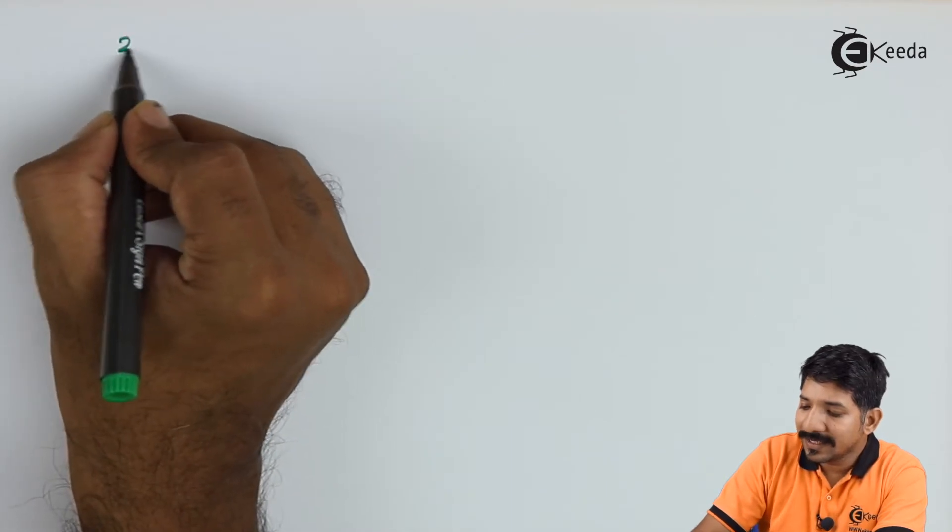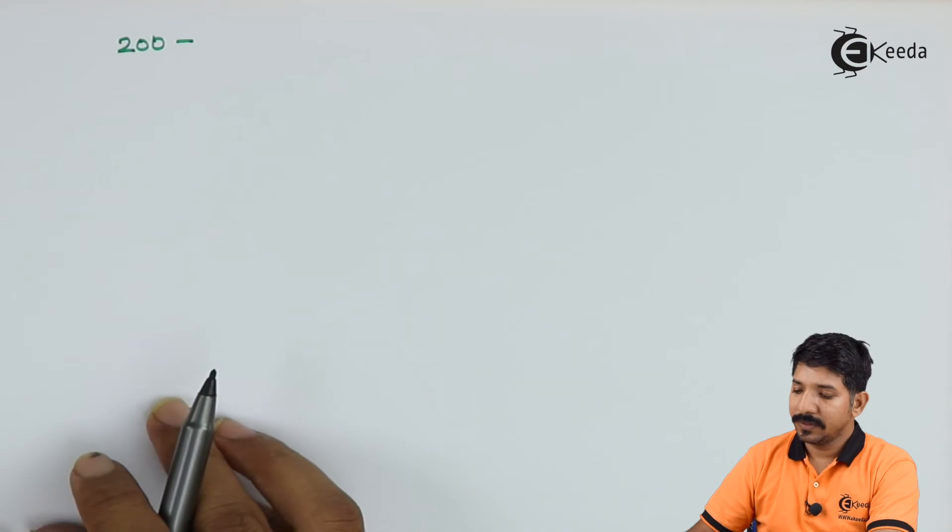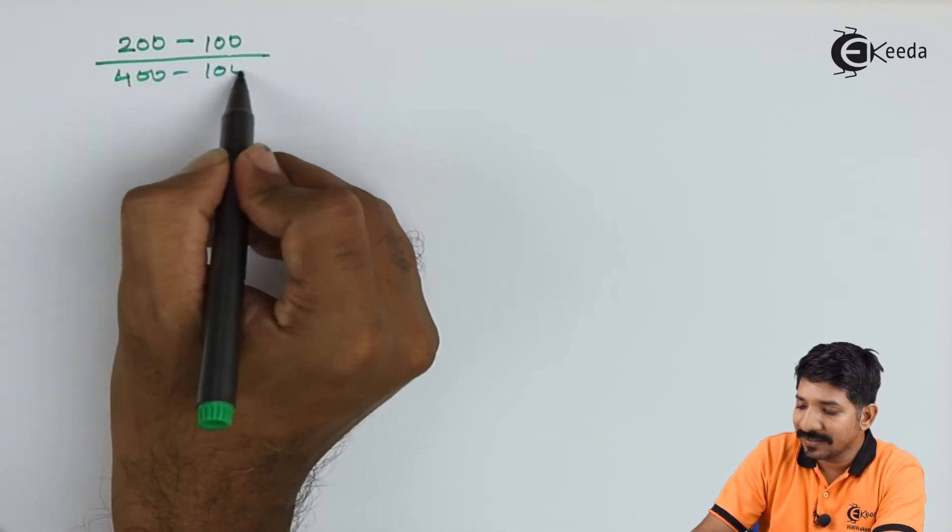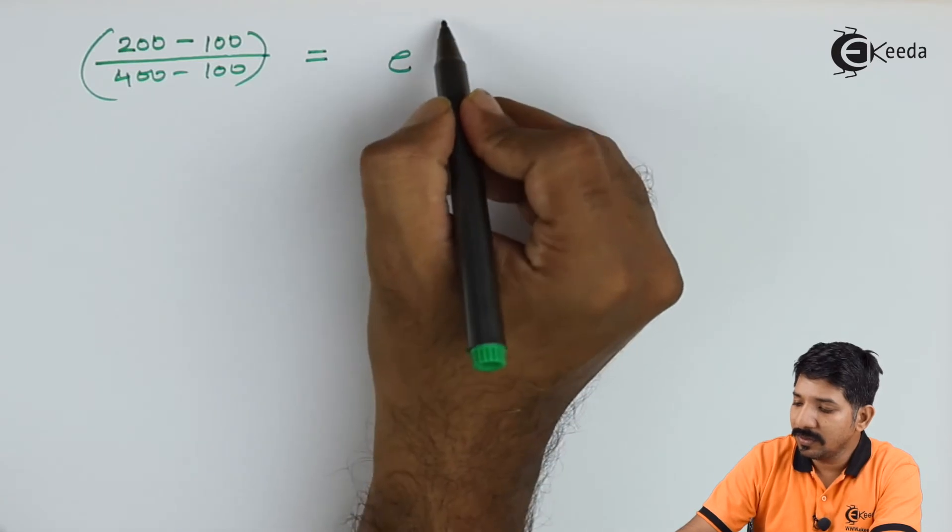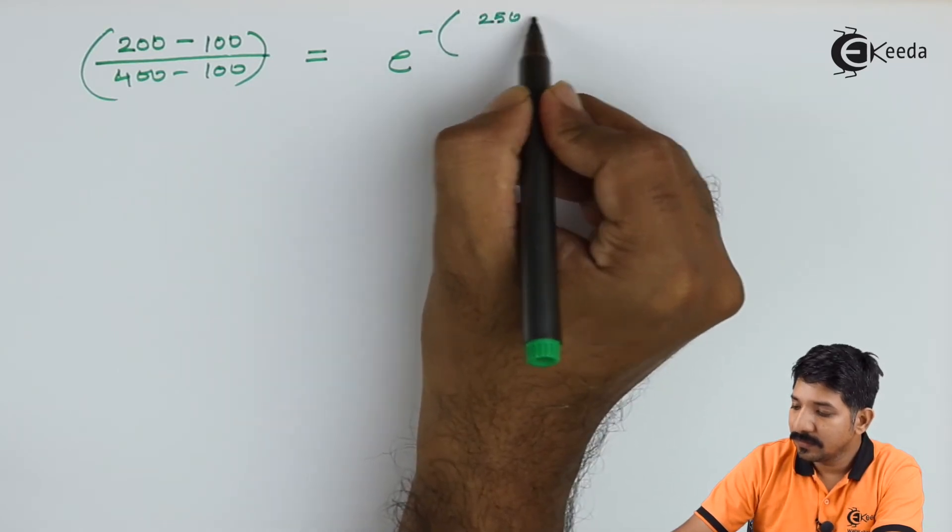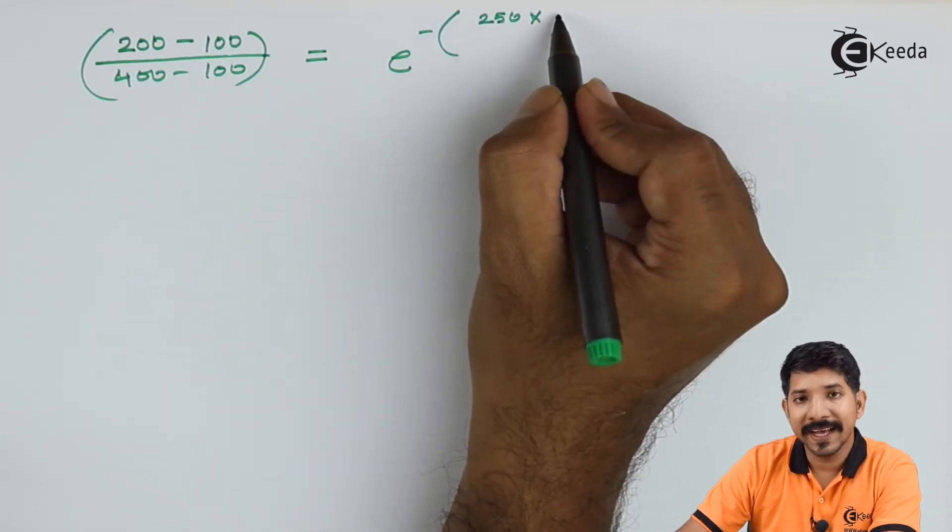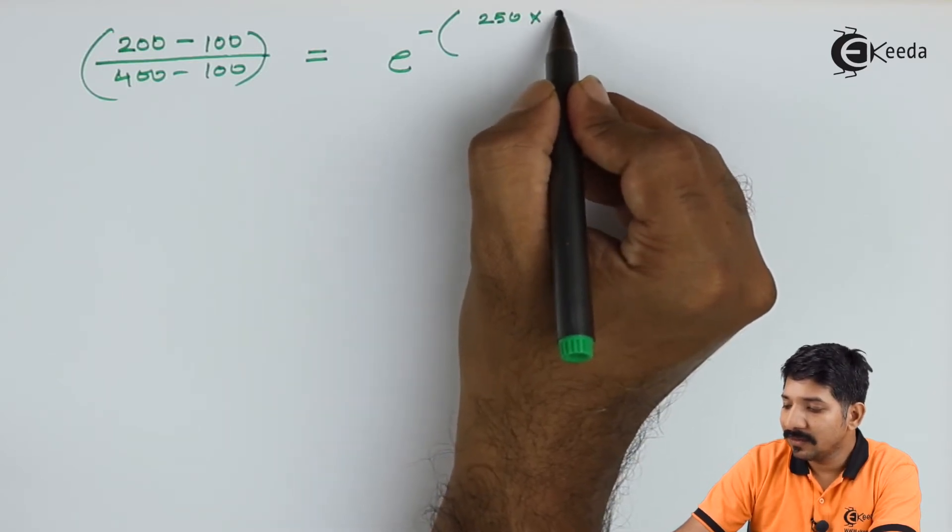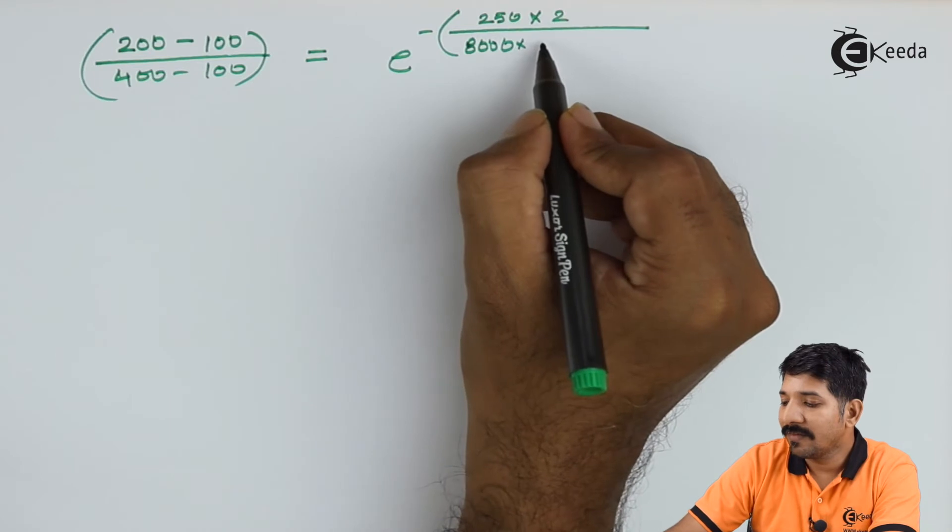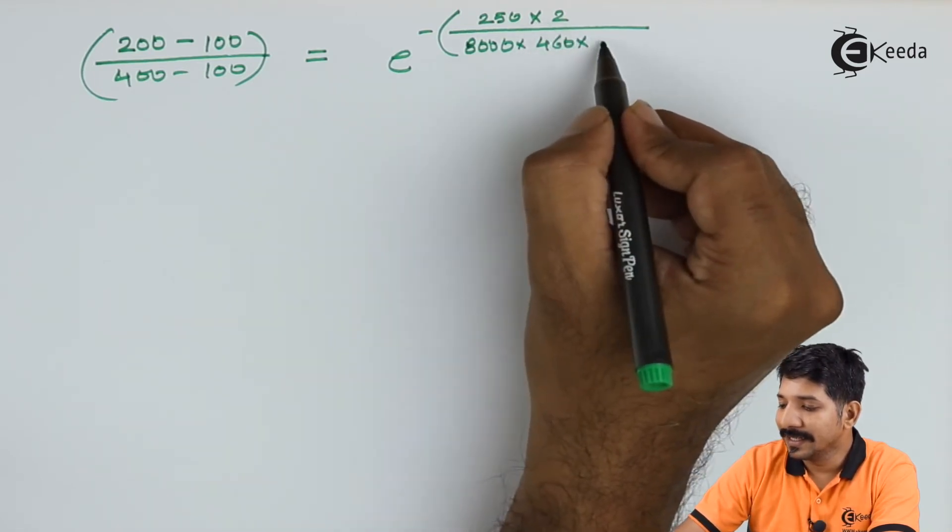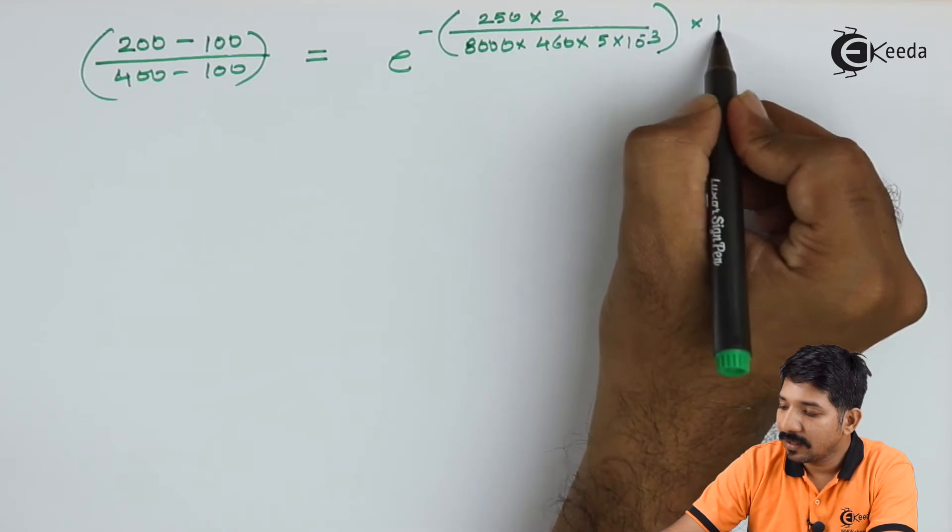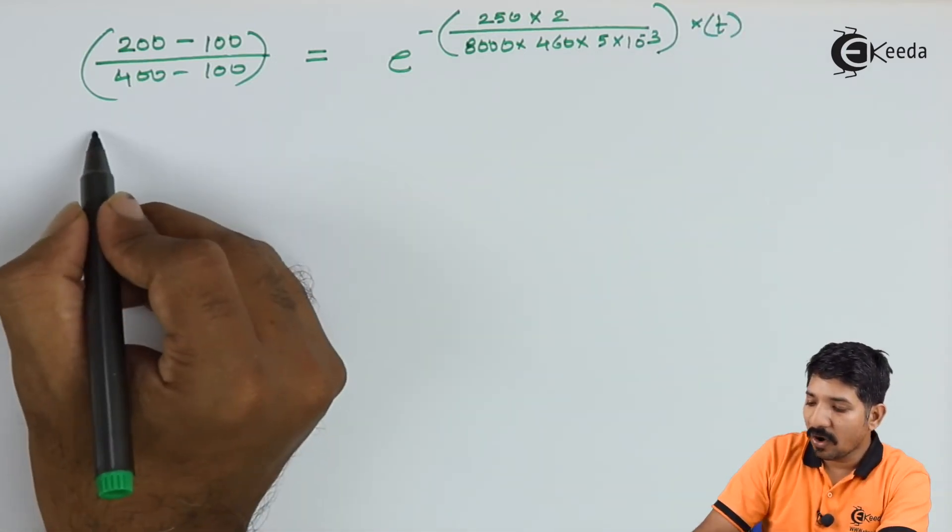Let us put the numbers. The temperature that they are asking is 200, and the surrounding temperature of the oil was 100. The initial temperature is 400 and the surrounding is 100. This is equal to e raised to minus, now the value of H is 250 multiplied by the area by volume. We can consider this as 2 by R, so we can write 2 over here. The density is 8000 and the value of CP is 460 multiplied by the radius that is 5 into 10 raised to minus 3, multiplied by time T.